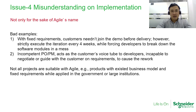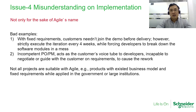The second bad example is an incompetent PO or PM acting only as a pass-through tool between customers and developers — incapable of negotiating or guiding customer requirements — which causes rework. It is very important to allow proactive customer involvement in the development process.